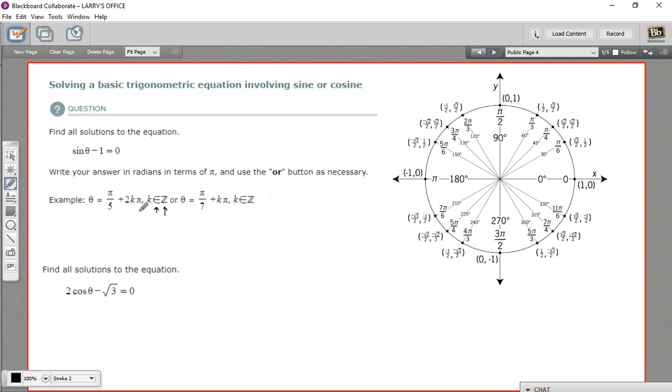So 2 pi, 4 pi, 6 pi, 8 pi, et cetera, onto infinity are going to satisfy this one. So that's a confusing-looking notation, but really not that hard of a concept. Let's try this.